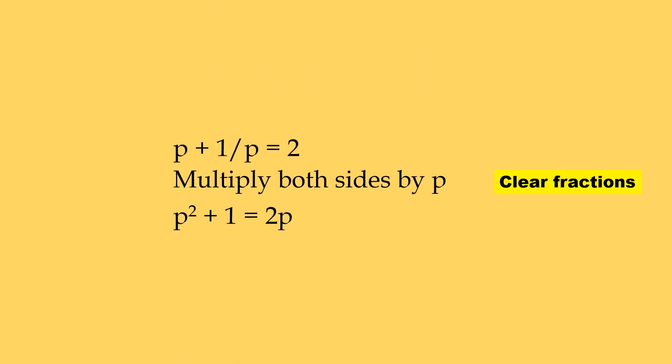Denominator has p. So to clear fractions, we multiply both sides by p. So we get p square plus 1 equal to 2p.